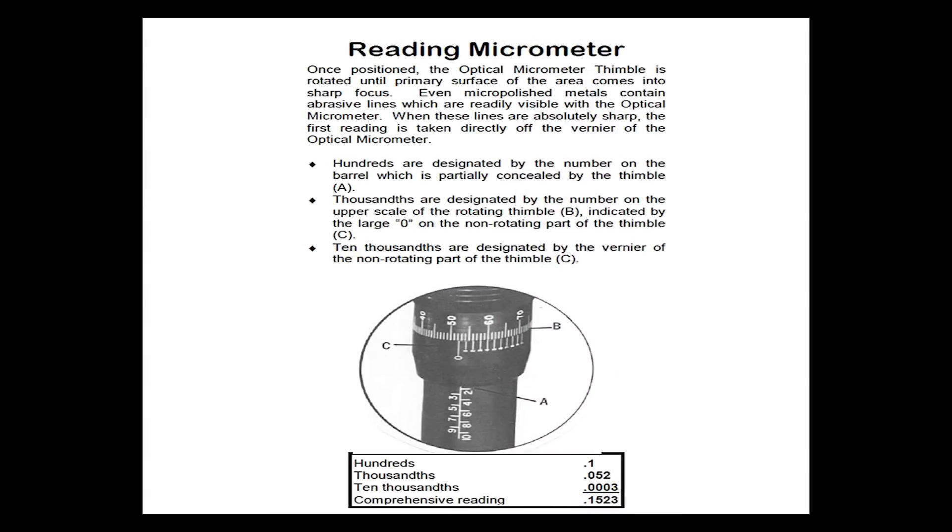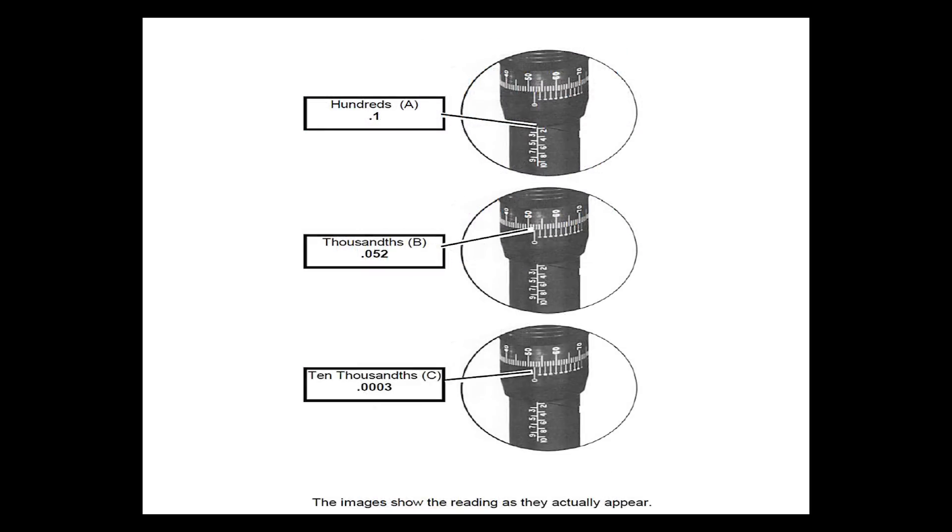Reading the micrometer. Once positioned, the optical micrometer thimble is rotated until primary surface of the area comes into sharp focus. Even micropolished metals contain abrasive lines which are readily visible with the optical micrometer. When these lines are absolutely sharp, the first reading is taken directly off the vernier of the optical micrometer. Hundreds are designated by the number of the barrel which is partially concealed by the thimble, A. Thousands are designated by the number of the upper scale of the rotating thimble, B, indicated by the large zero on the non-rotating part of the thimble, C. Ten thousandths are designated by the vernier of the non-rotating part of the thimble. Here is an example of one-tenth of an inch read on A. On the B scale, we're reading fifty-two thousandths. And on C, we're reading three ten-thousandths.